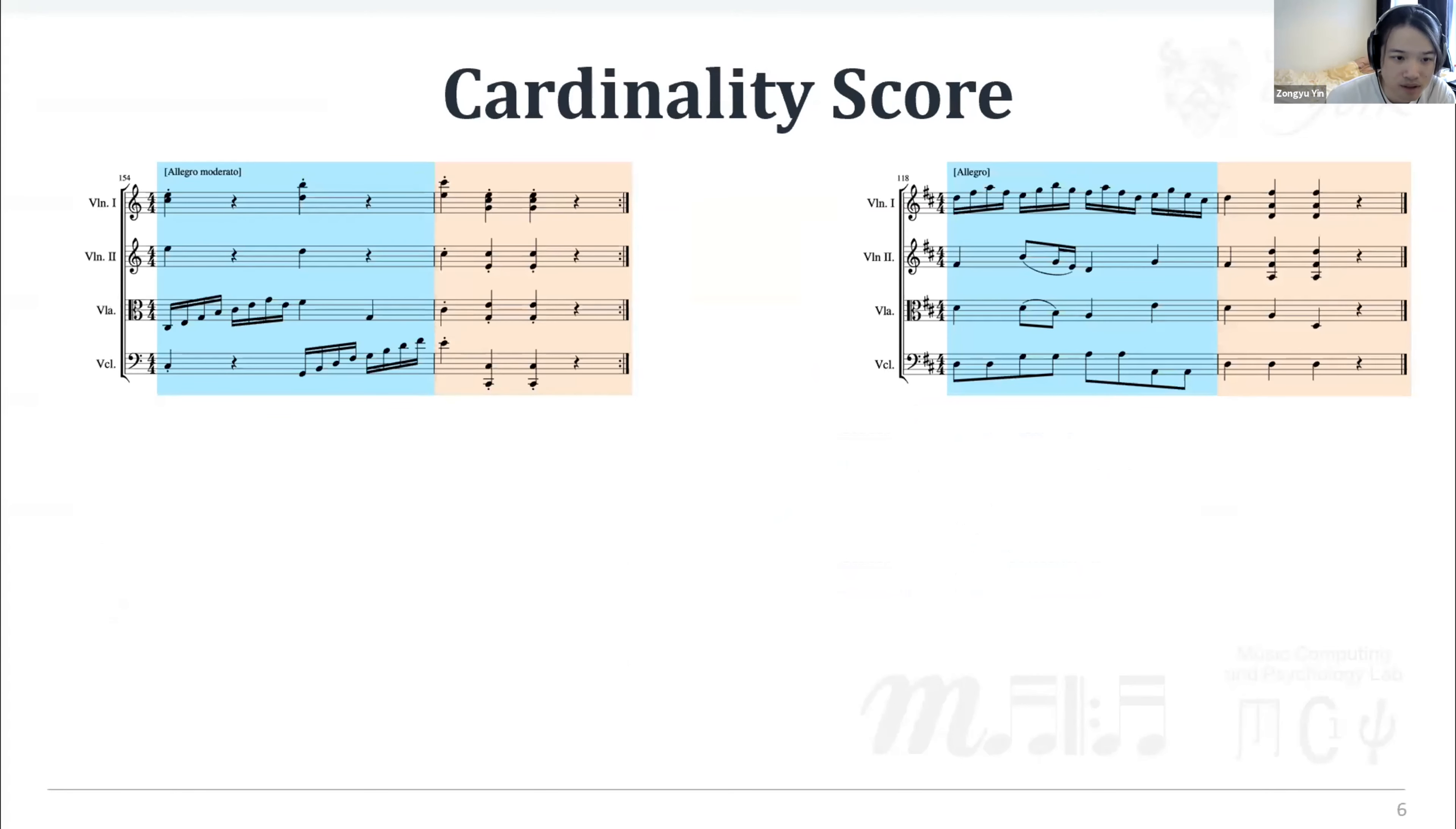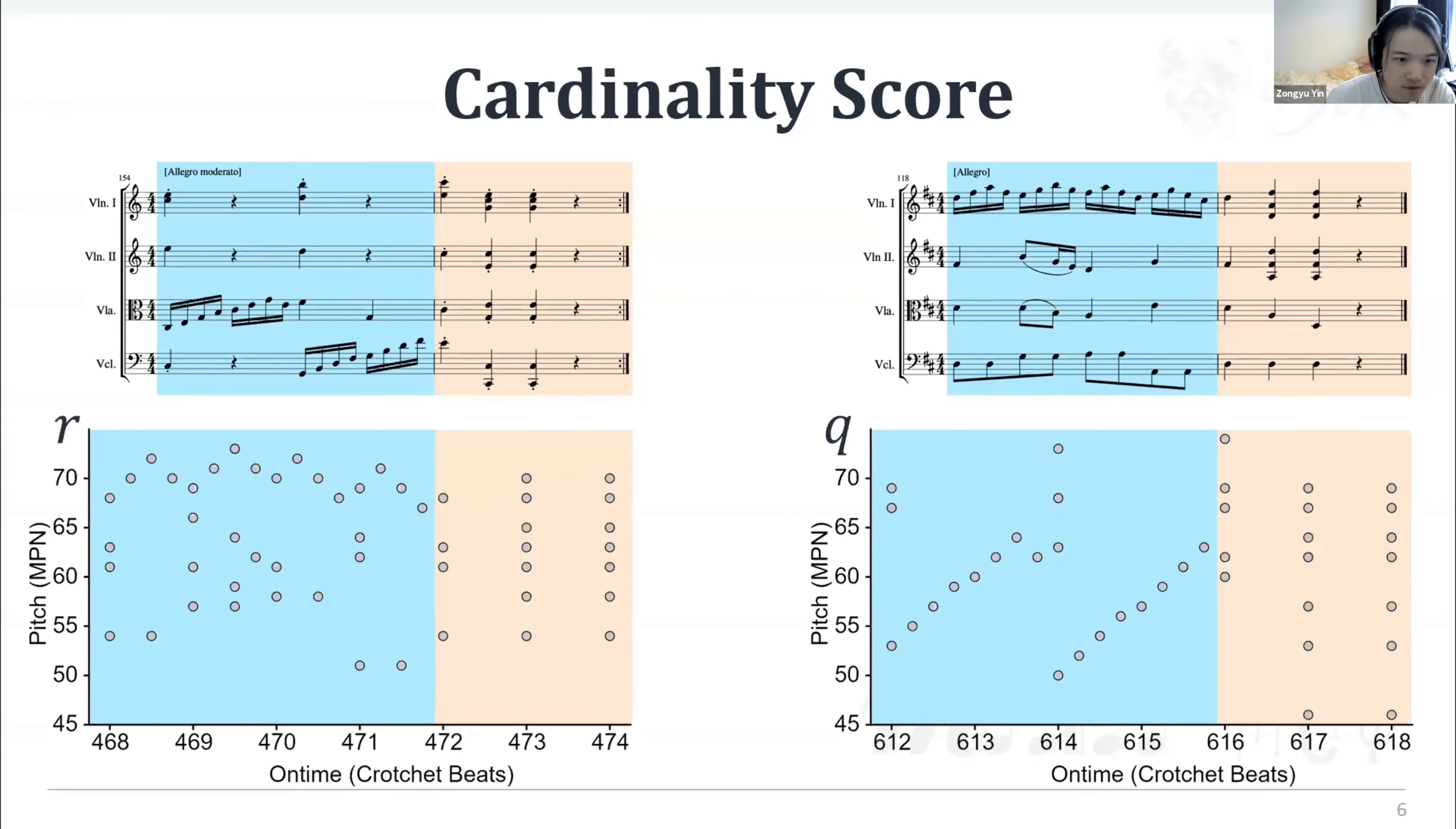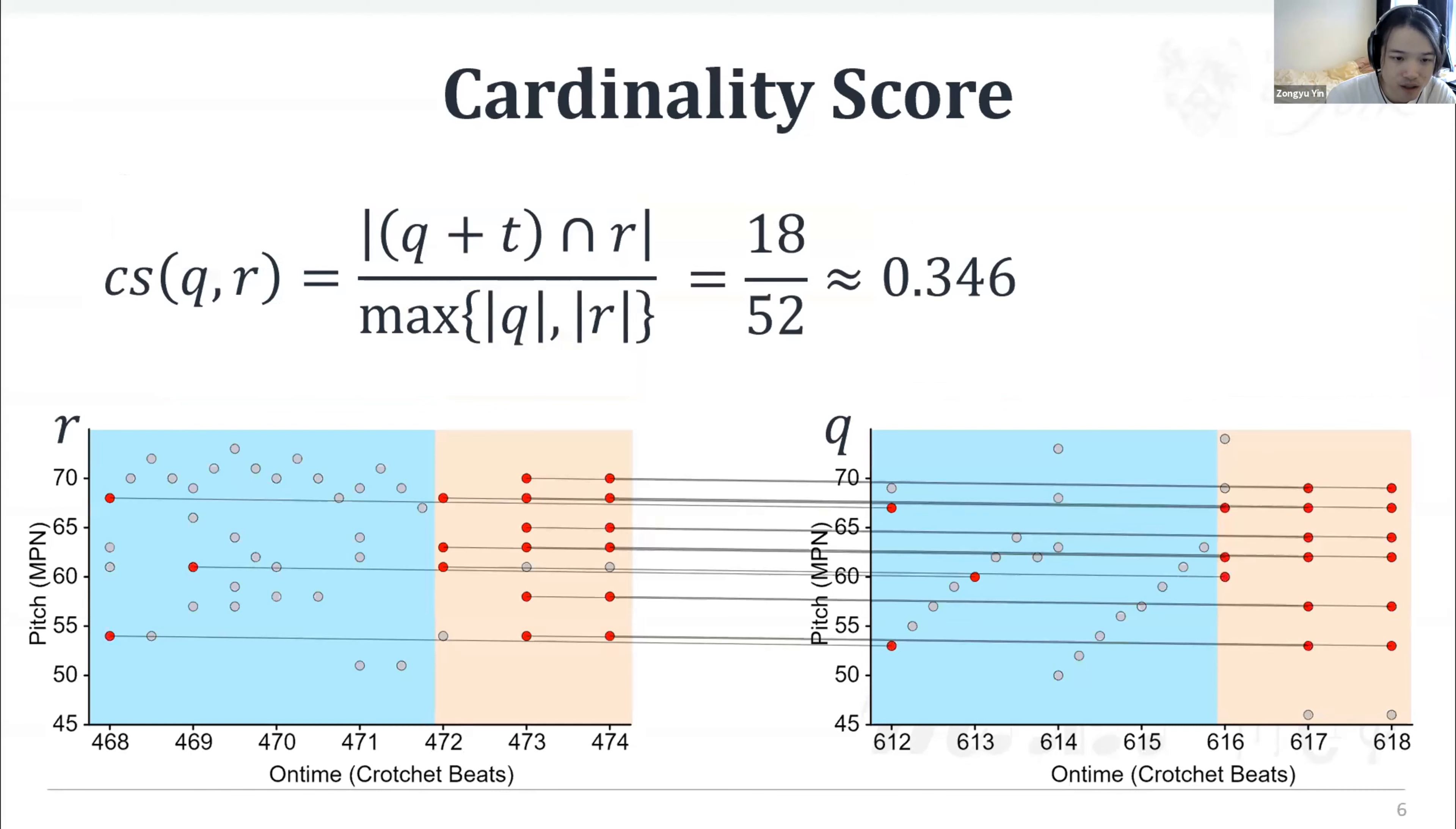Carry on with the point set representation. Here I introduce cardinality score that we use to measure the similarity between two excerpts. Firstly, we map notes with pitch and onset time into two-dimensional space, which produce two sets of points, denoted as target R and query Q. For visualization purpose, the background color here is only used to distinguish the first and second bar. According to the equation above, by searching the translation vector T, we can maximally find 18 points or notes in Q that overlapped with points in R, and divided by the max size between two sets of points, we can get a cardinality score of 0.346.